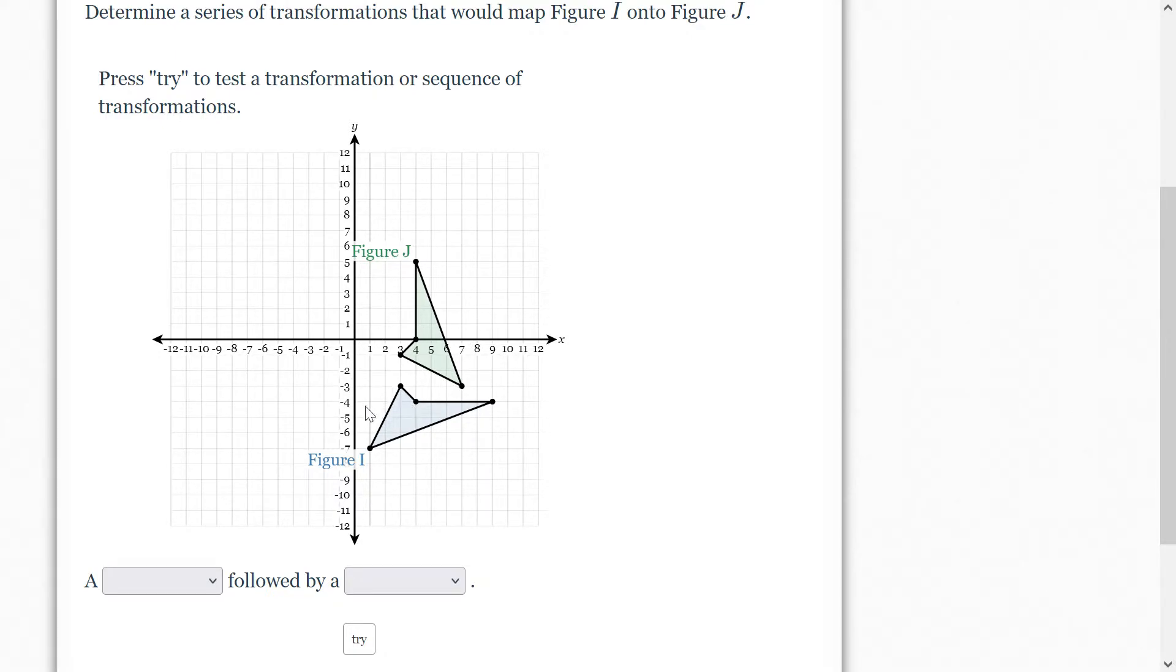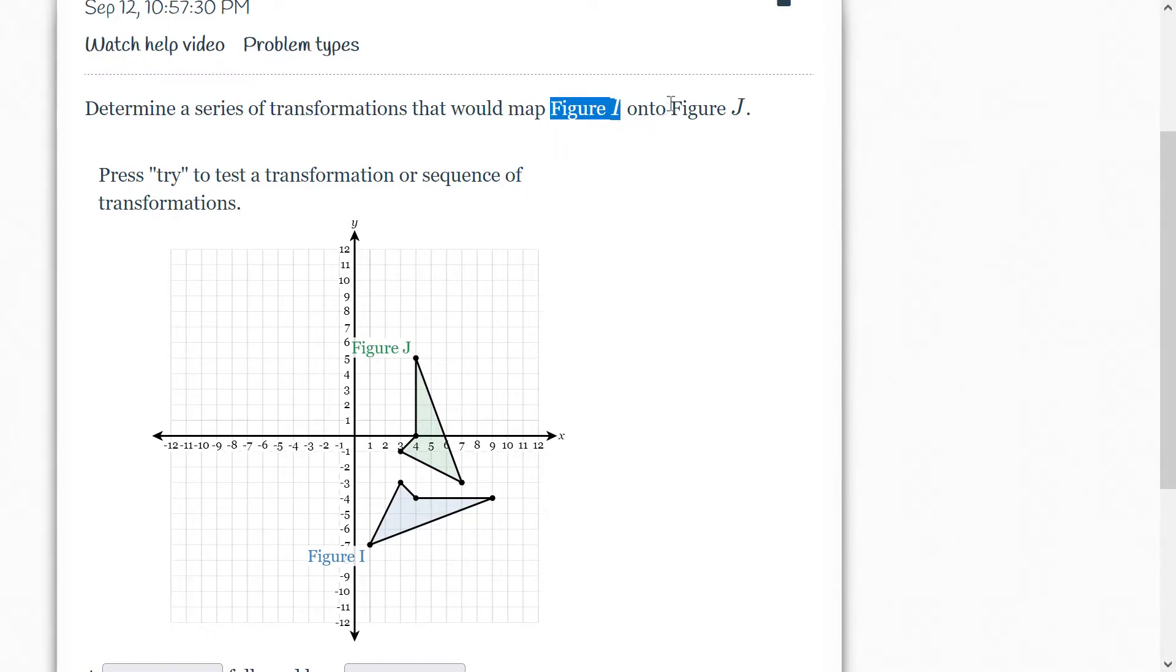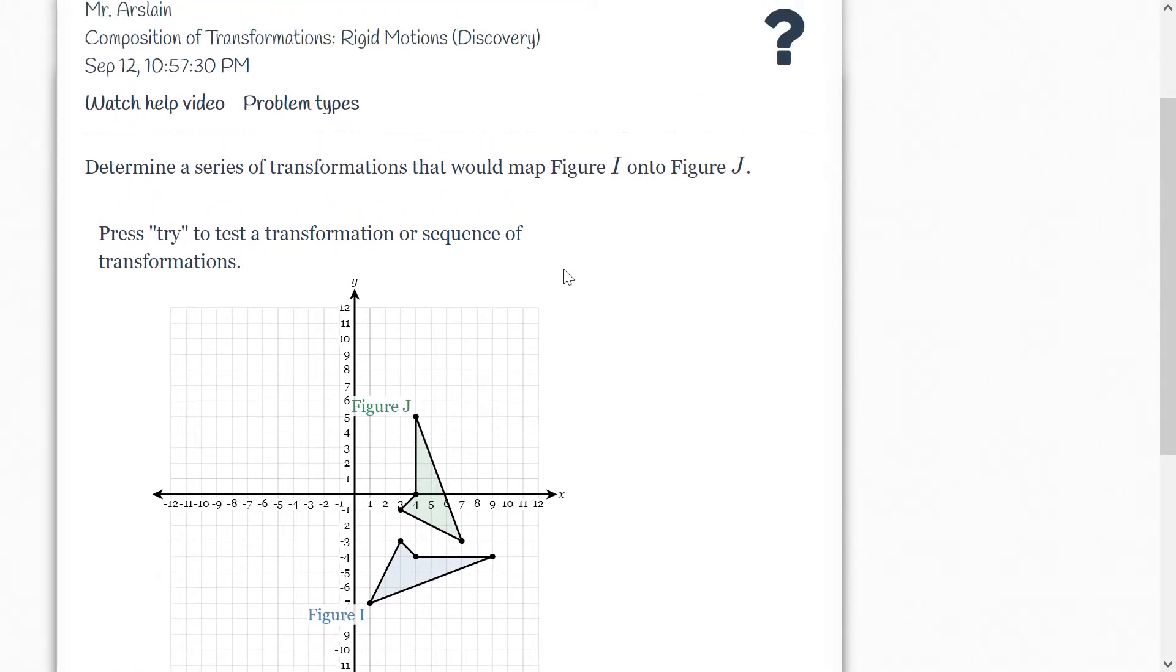Now normally we would be able to tell those by having like A, B, C, and D, and then A prime, B prime, C prime, and D prime. But notice in this case, they just tell us it's figure I onto figure J.